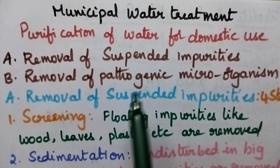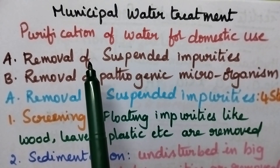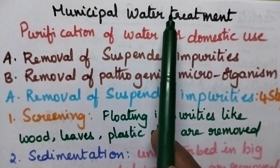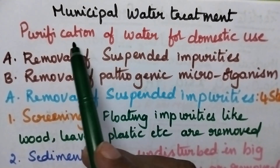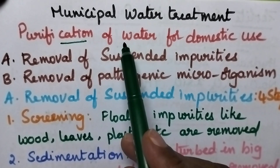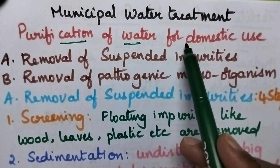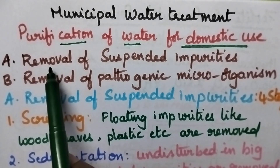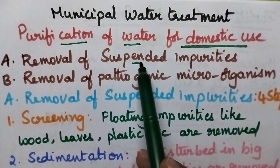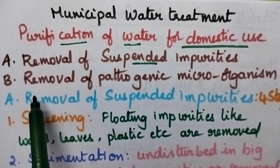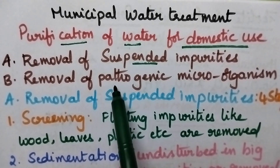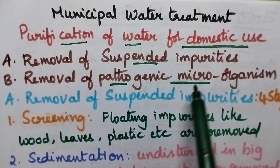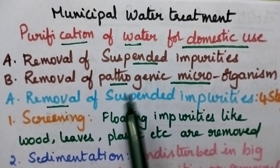Hello students, welcome back to my channel. In this video I am going to discuss in brief about municipal water treatment, which is suitable for the purification of water for domestic use. It involves two steps: one is the removal of suspended impurities, and the second step involves the removal of pathogenic microorganisms.